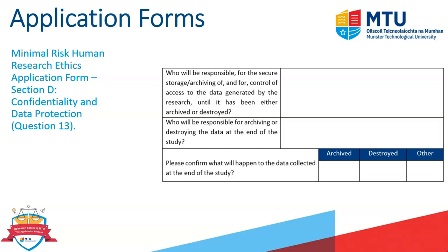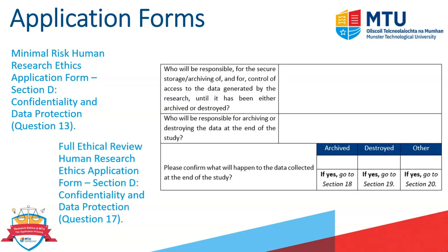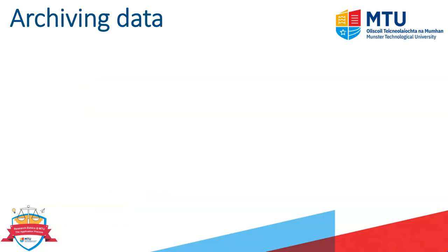In the last part of question 16 in the minimal risk application form, and in the full ethical review application form, you're asked about archiving, destroying, or other options for the data. In the full ethical review form, more detailed information is required because the data is more likely to be sensitive, meaning who does what needs to be clearly stated.